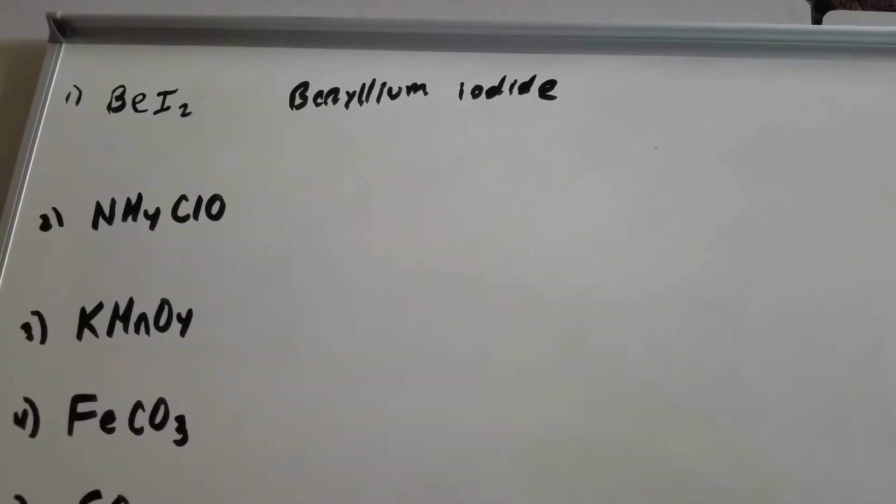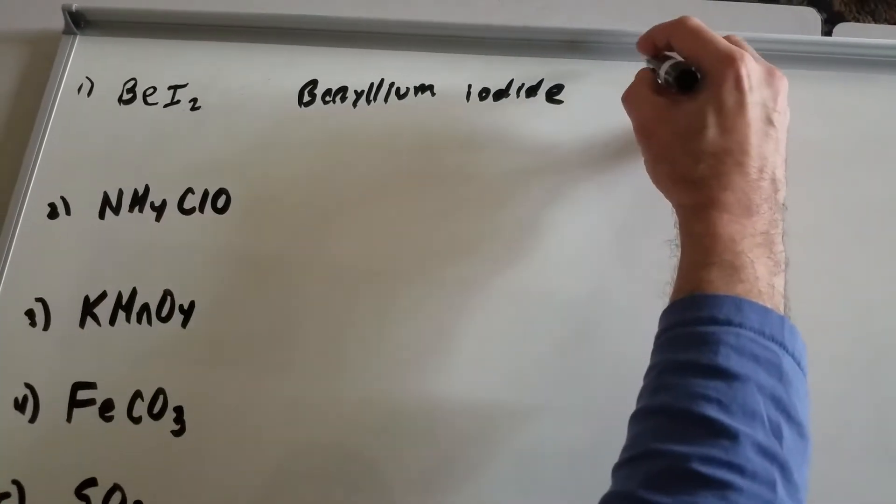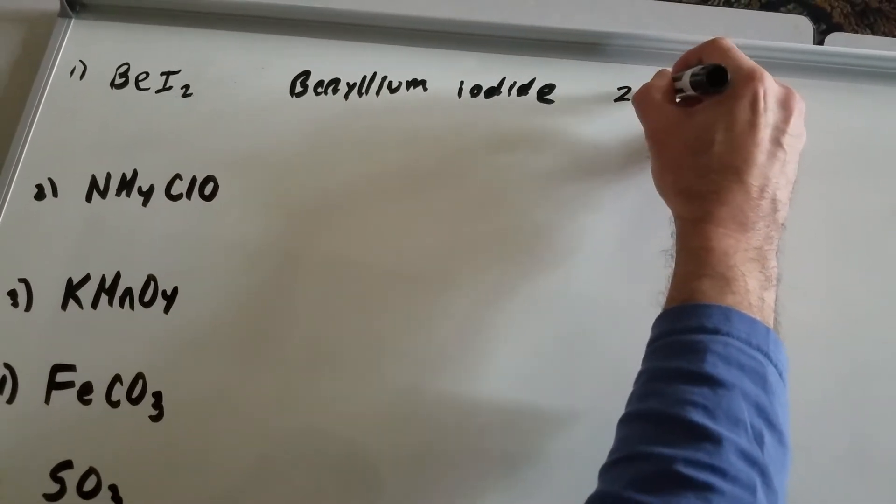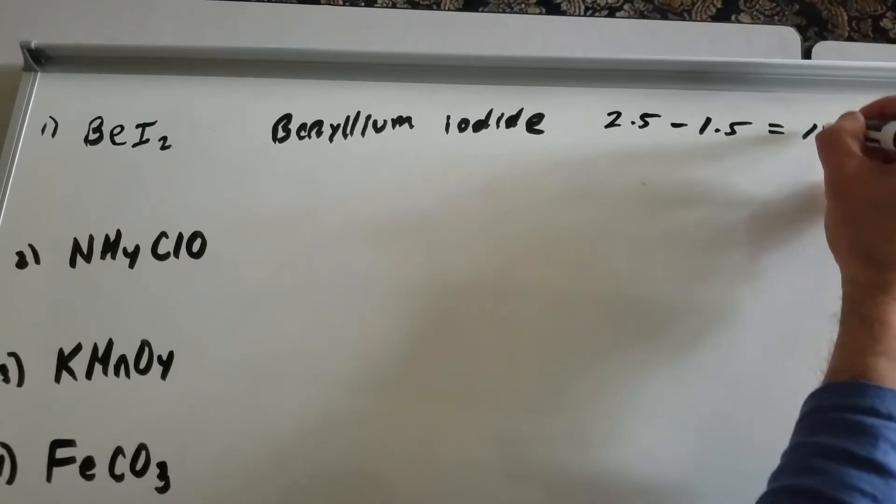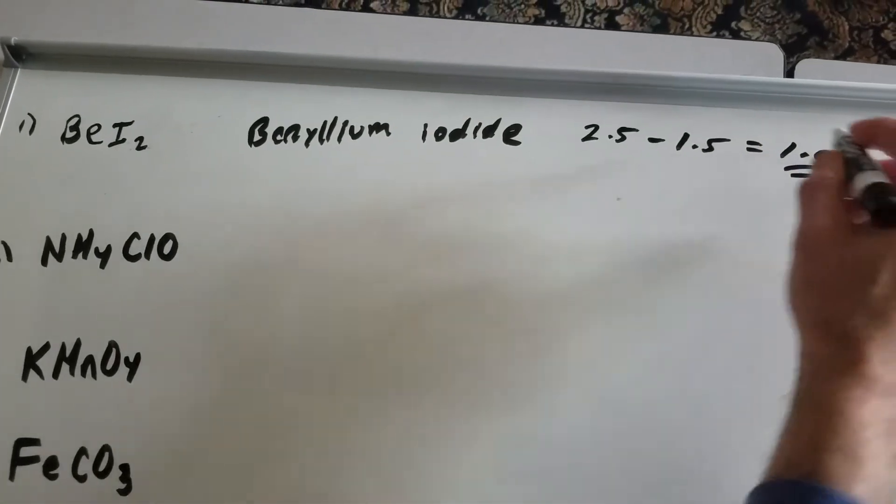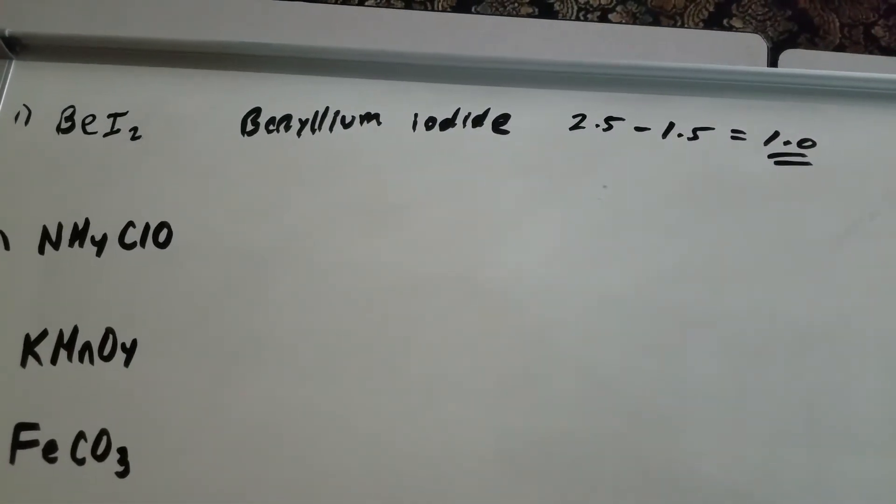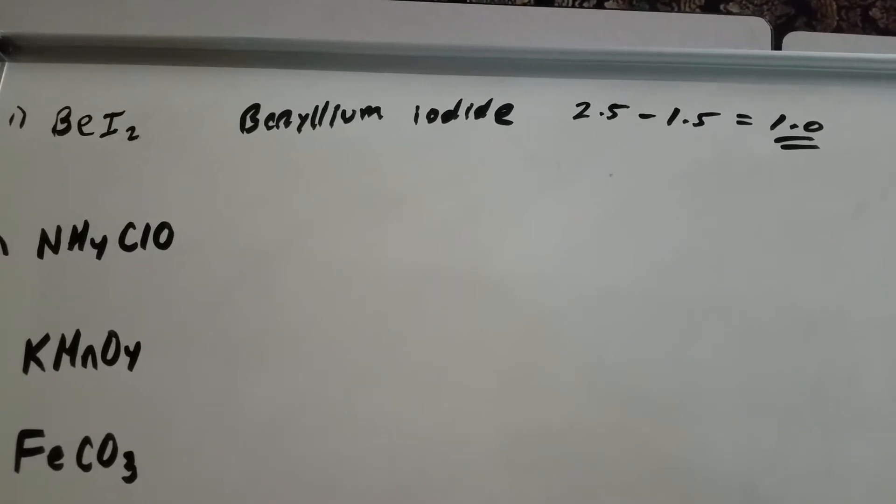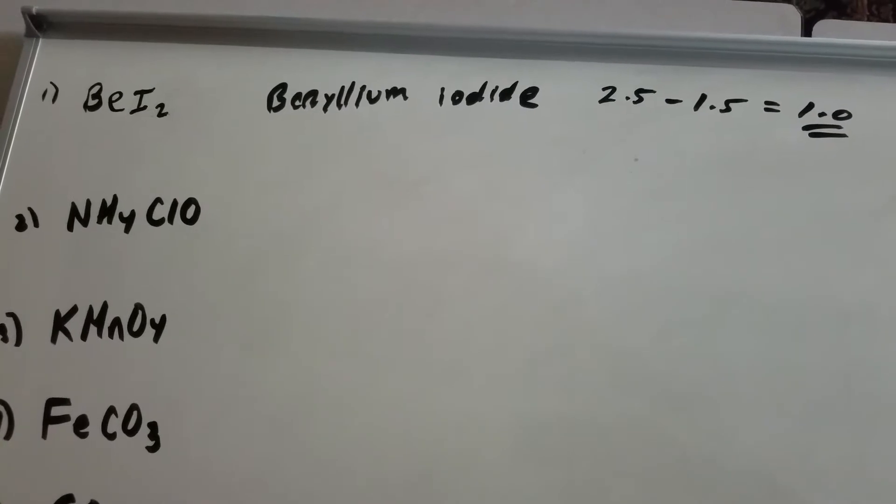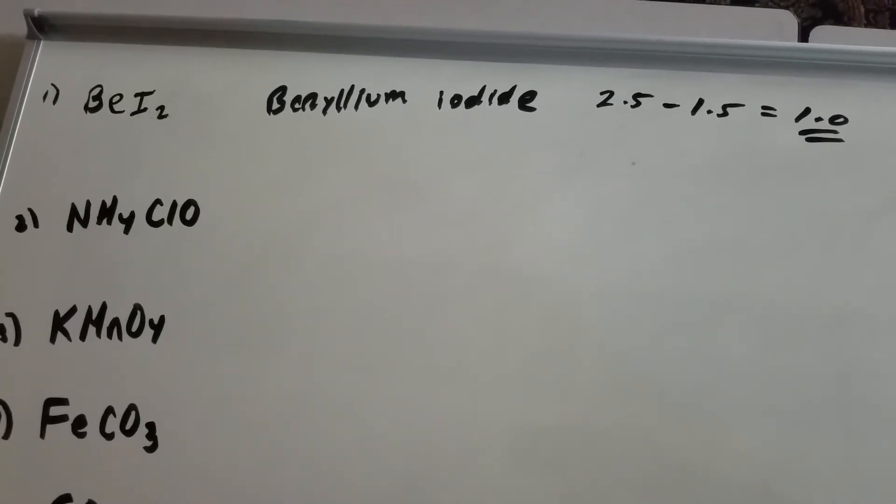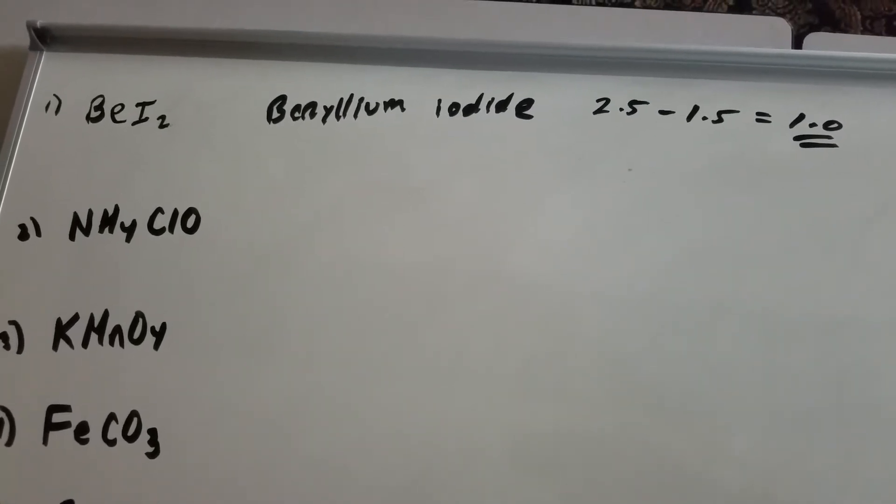It does not form ionic compounds. If you looked at the electronegativity of beryllium, it's 2.5. Iodine is 1.5, and it gave you 1.0. Only when you're at 1.7 and over is it ionic. This is way under that. I'm not asking you to memorize some silly numbers, but just remember, a beryllium compound will almost always betray you as far as being ionic.